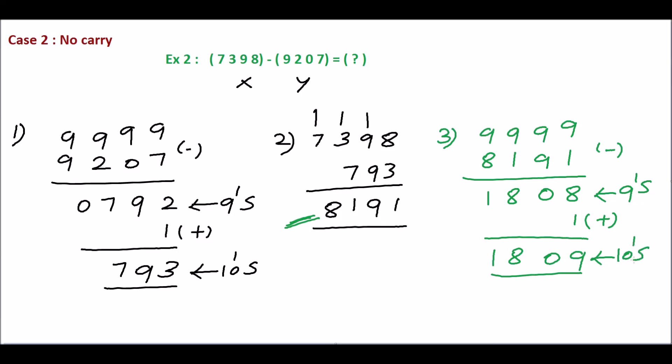Finally, assign a negative sign to this. So the answer is minus 1809 base 10.